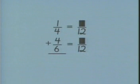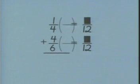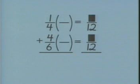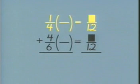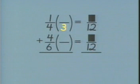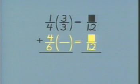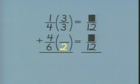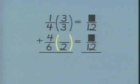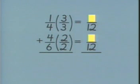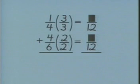Now we find the equivalent fractions for one-fourth and four-sixths. First we figure out the fraction of one in both equations. We multiply four by three to get twelve, so the fraction of one is three-thirds. We multiply six by two to get twelve, so the fraction of one is two-halves.